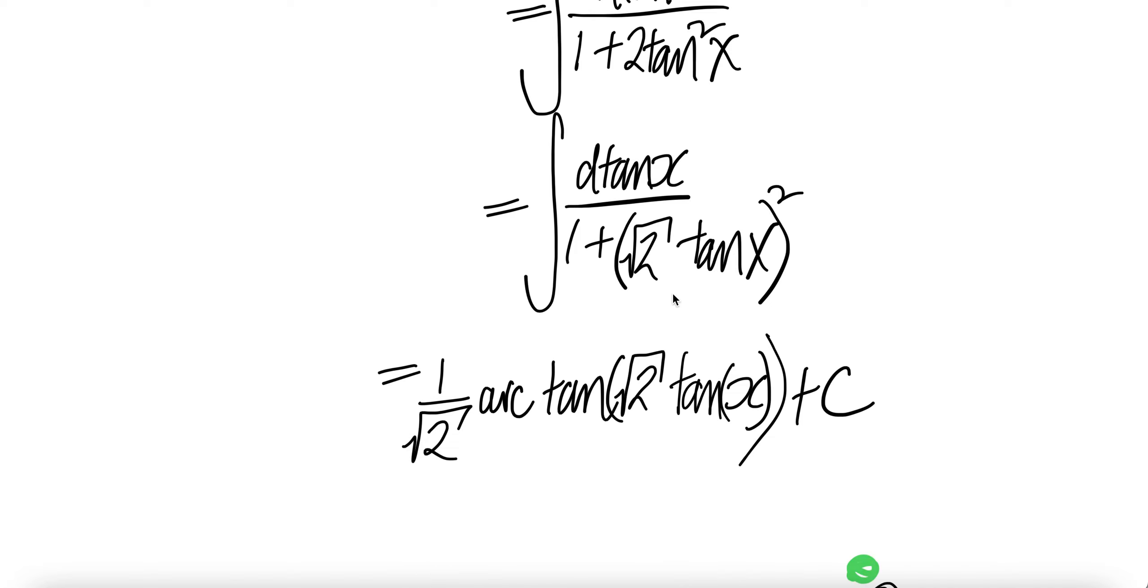Now we can output the result of this integral. It will be arctan of what we have here. And check coefficient. There's 1. Square root 2. They are different. Therefore, we need to correct by dividing by square root 2.